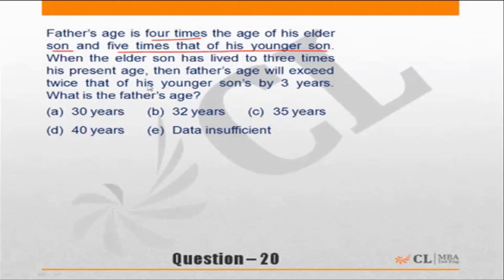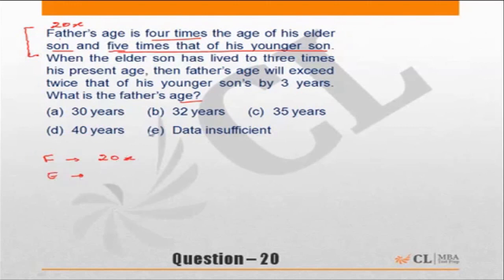When the elder son has lived to three times his present age, the father's age will exceed twice that of his younger son by three years. What is the father's age now? In this question, we tend to get confused in the first couple of lines. To make your calculation easier, assume the father's age to be a multiple of both five and four — that's twenty. So let the father's age be 20x, elder son's age be 5x, and younger son's age be 4x.